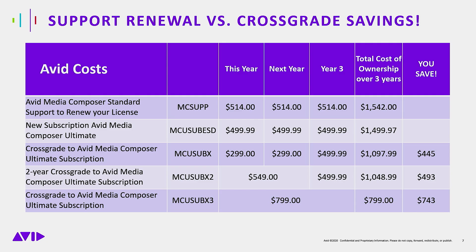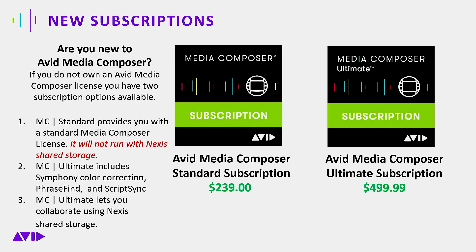What I think is the best deal is the two-year cross-grade. For $5.49 — just $35 more than the support would cost you — you get two years. Then the third year at $4.99, you're at $1,048, saving almost $500. And if you've got the cash and can go $7.99 right now to get three years of Avid Media Composer Ultimate, that's the way to go — you save $743. That's a great savings.